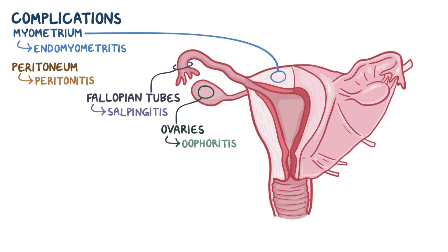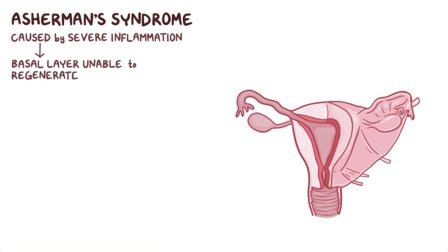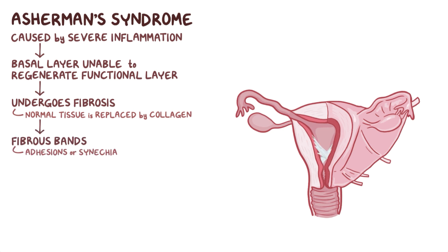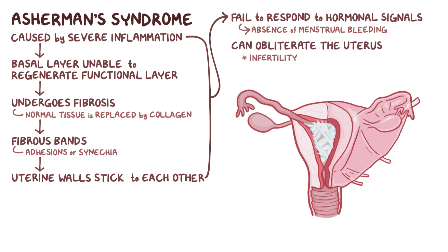One potential complication of chronic endometritis, especially when it's caused by tuberculosis, is Asherman syndrome, also known as intrauterine adhesions. Asherman syndrome occurs when the inflammation of the endometrium is so severe that it makes the basal layer unable to regenerate the functional layer. Instead, the basal layer undergoes fibrosis, where normal tissue is replaced by collagen. This leads to the formation of multiple fibrous bands, also called adhesions or synechiae, which makes the uterine walls stick to each other. This causes the endometrium to fail to respond to hormonal stimulation, leading to the absence of menstrual bleeding. In severe cases, these fibrous bands can completely obliterate the uterus, causing infertility or recurrent pregnancy loss.